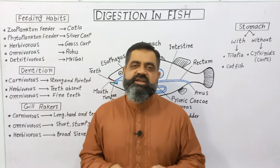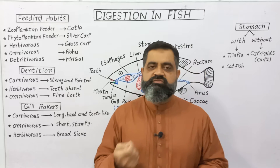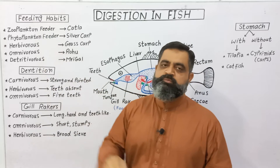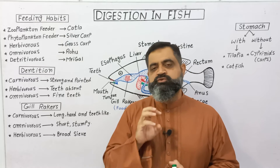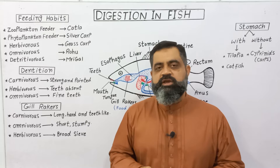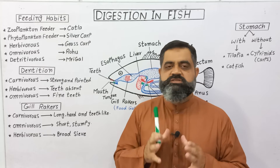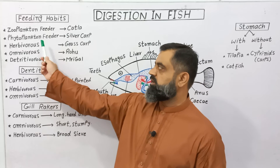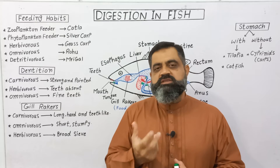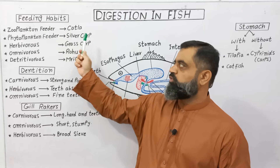Now we will discuss feeding habits. Different species of fish take food in different forms. Some fish are zooplankton feeders — zooplankton are floating microscopic animals which live in water and float on the surface or middle layer. Fish like Catla feed on these creatures. Some fish are phytoplankton feeders — phytoplankton are microscopic algae that drift in water, usually belonging to algae groups.